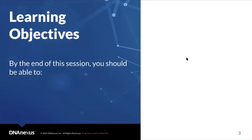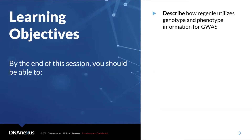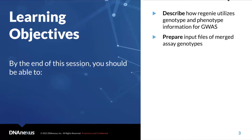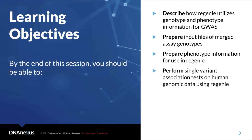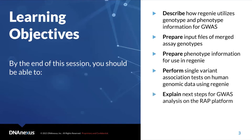Let me show the learning objectives for this session. By the end of the session, you should be able to describe how REGENIE utilizes genotype and phenotype information for GWAS, prepare input files of merged assay genotypes, prepare phenotype information in a phenotype file to use in REGENIE, perform single variant association tests on human genomic data using REGENIE, and explain next steps for GWAS analysis on the UKBRAP platform.